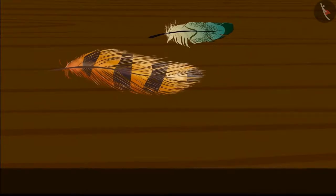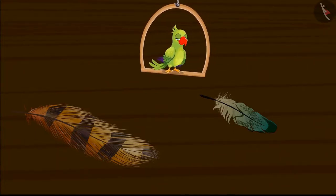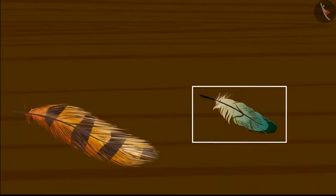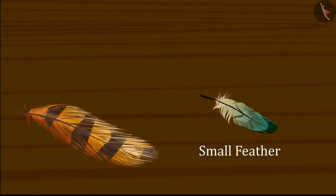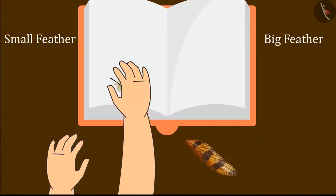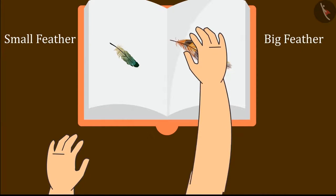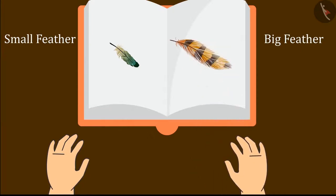Here are the two feathers of the bird. So hey kids, can you tell which one of these feathers is shorter? You thought right, kids — this is a small feather. I will paste the small feather here and now I will paste this big feather here.